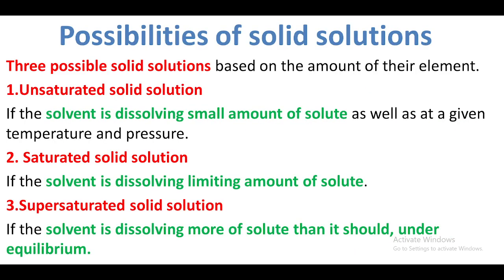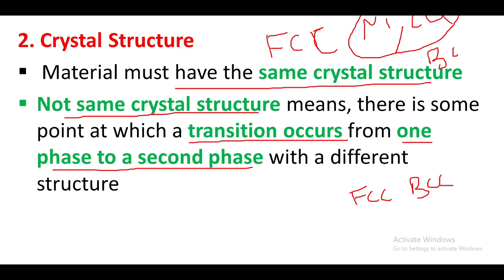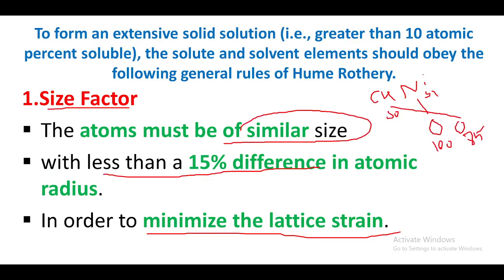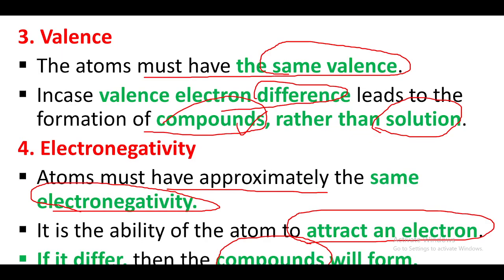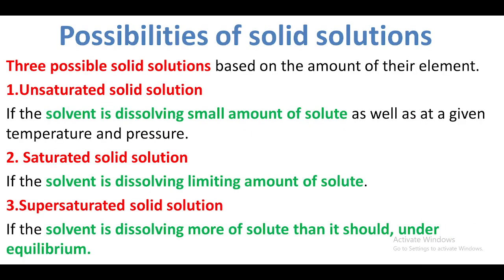In summary, the four factors of Hume-Rothery rules are: size factor, crystal structure, valence, and electronegativity. If any one of these four factors is different between the solute and solvent, only partial solubility is possible.